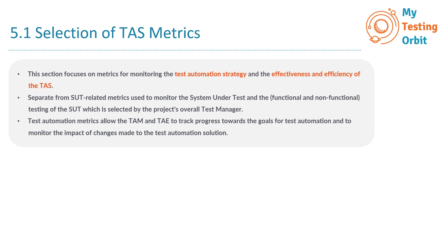Test automation metrics allow the TAM and TAE to track progress towards the goals for test automation and to monitor the impact of changes made to the test automation solution. These metrics are the domain of the TAM (test automation manager) and the TAE (test automation engineer). To summarize, test automation metrics are like instruments for gauging the efficiency of the automation strategy, while SUT-related metrics focus on the quality and performance of the software being tested. Each set serves a distinct purpose and is managed by different roles within the testing team.